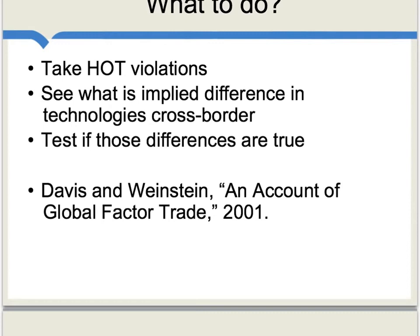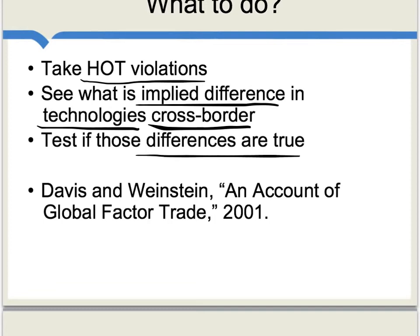There is now a whole new research program: take observed Heckscher-Ohlin theorem violations, infer from those violations the implied differences in technologies across borders, and then do independent tests to see if those differences are actually true. The original version of the Heckscher-Ohlin theorem is turning out to be false, but the theorem remains useful. If you modify the assumption of identical technologies, the combination of the theorem with an account of technological differences gives you a useful framework for explaining patterns of global trade.